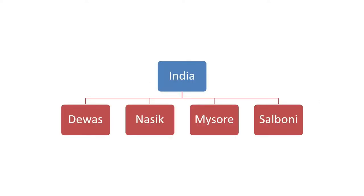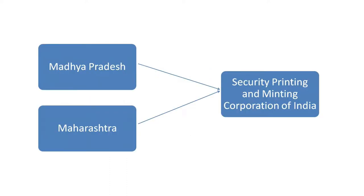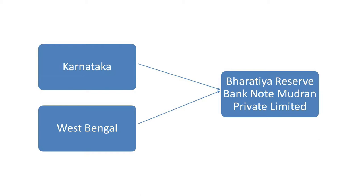There are four printing presses that print and supply bank notes. These are located at Dewas in Madhya Pradesh, Nashik in Maharashtra, Mysore in Karnataka, and Salboni in West Bengal. The presses in Madhya Pradesh and Maharashtra are owned by the Security Printing and Minting Corporation of India, which is a wholly owned company of the Government of India. The presses in Karnataka and West Bengal are owned by Bharatiya Reserve Bank Note Mudran Private Limited, which is a wholly owned subsidiary of the Reserve Bank.